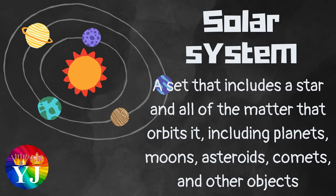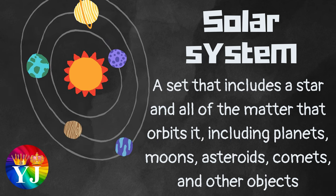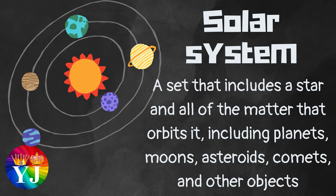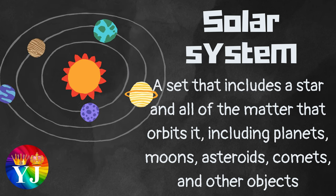Solar System: A set that includes a star and all of the matter that orbits it, including planets, moons, asteroids, comets, and other objects.